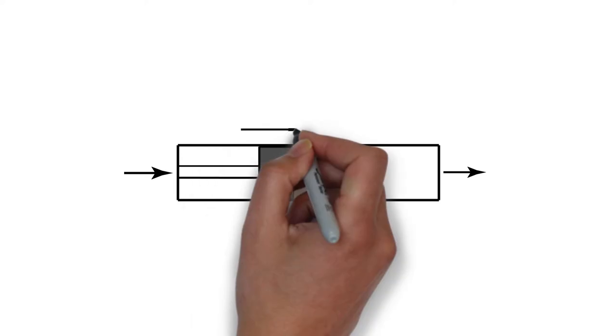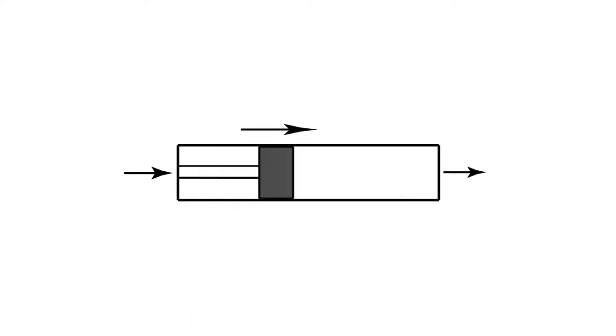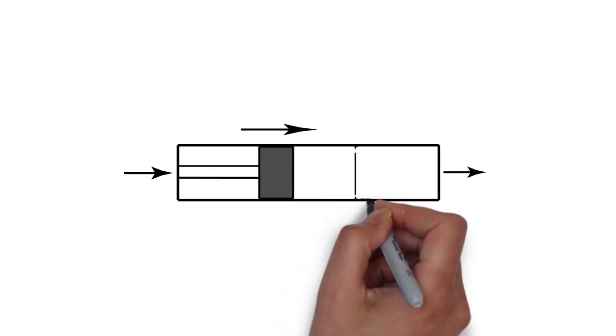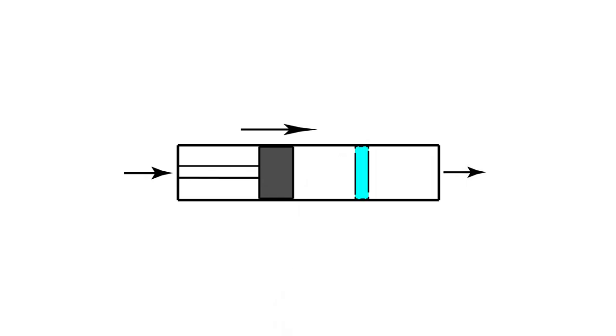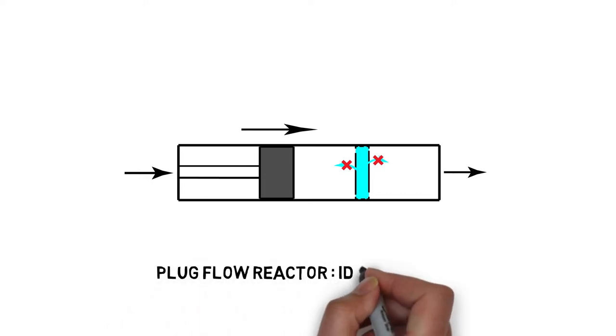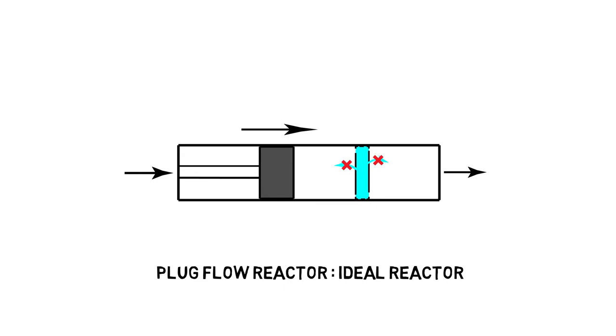In a tubular reactor, all the molecules move through it at roughly the same speed. You can imagine a piston that moves forward inside the reactor at a constant speed pushing the fluid. The molecules that are located in a small section of this reactor are hardly mixed with the molecules just behind them or just in front of them. This type of behavior does not actually exist in reality, but we can get quite close to it. The plug flow reactor is an ideal reactor which is used as a guideline for the design of industrial tubular reactors.